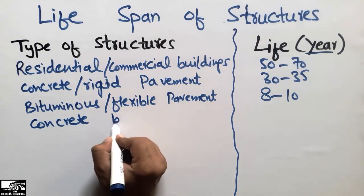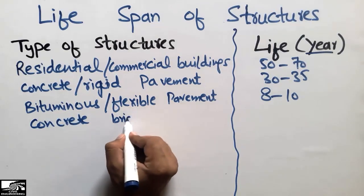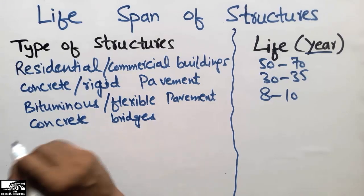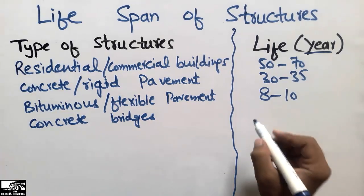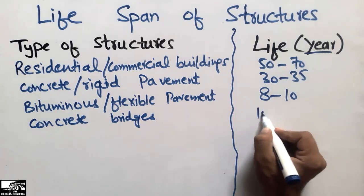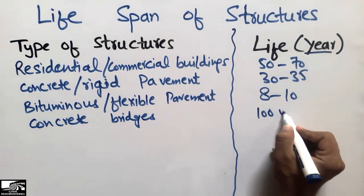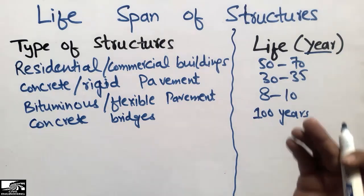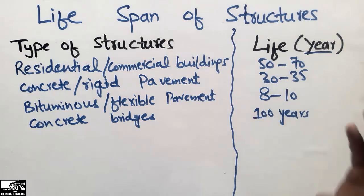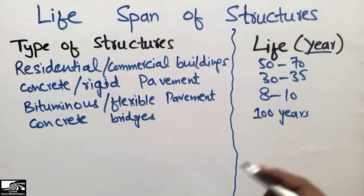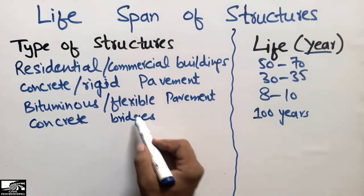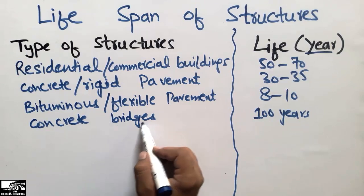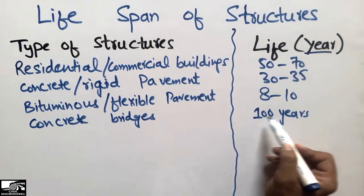Concrete bridges have a life period of 100 years. The heavier the structure, the longer the life period. Bridges are heavy mega-project structures, so they have more life expectancy.